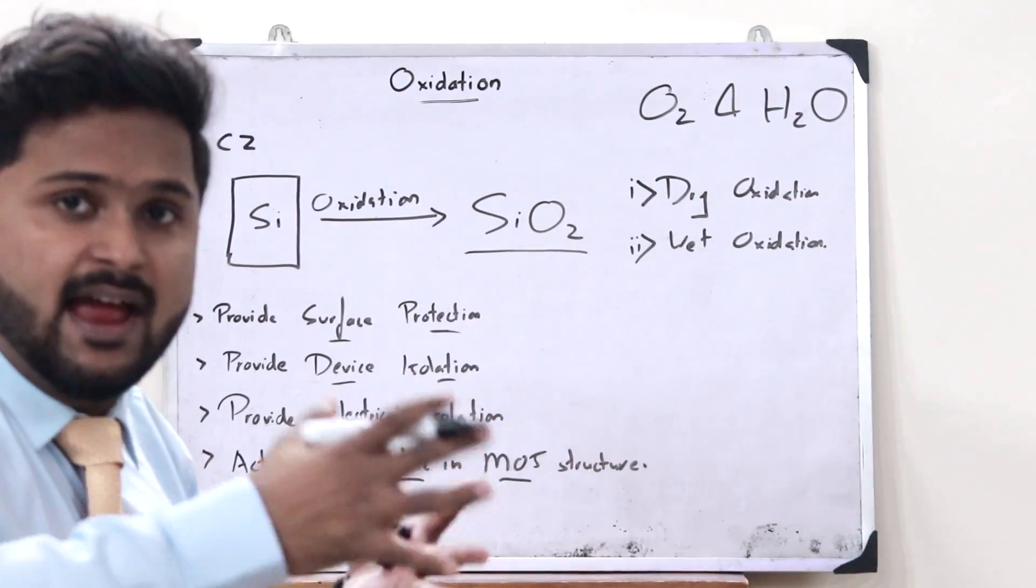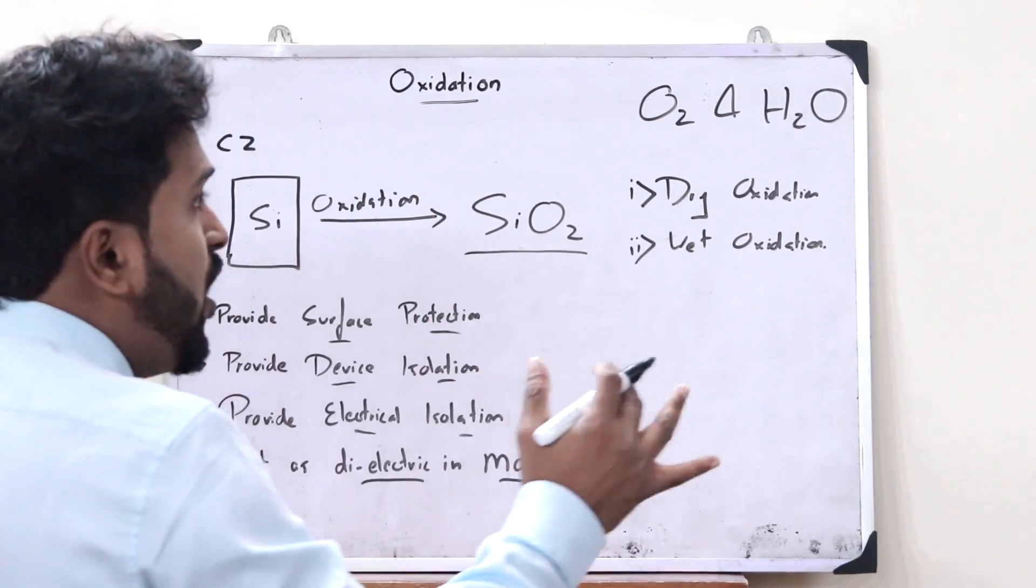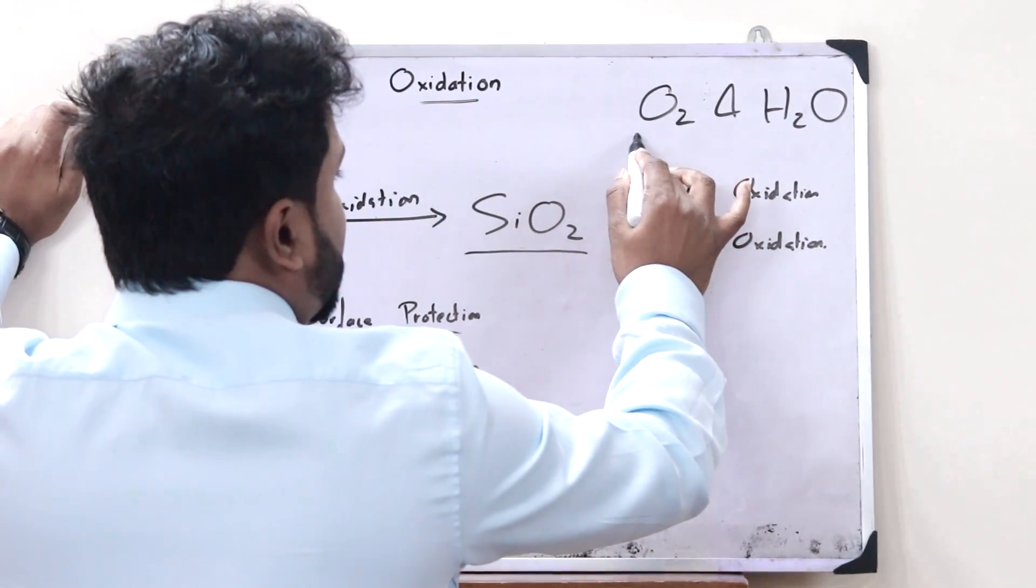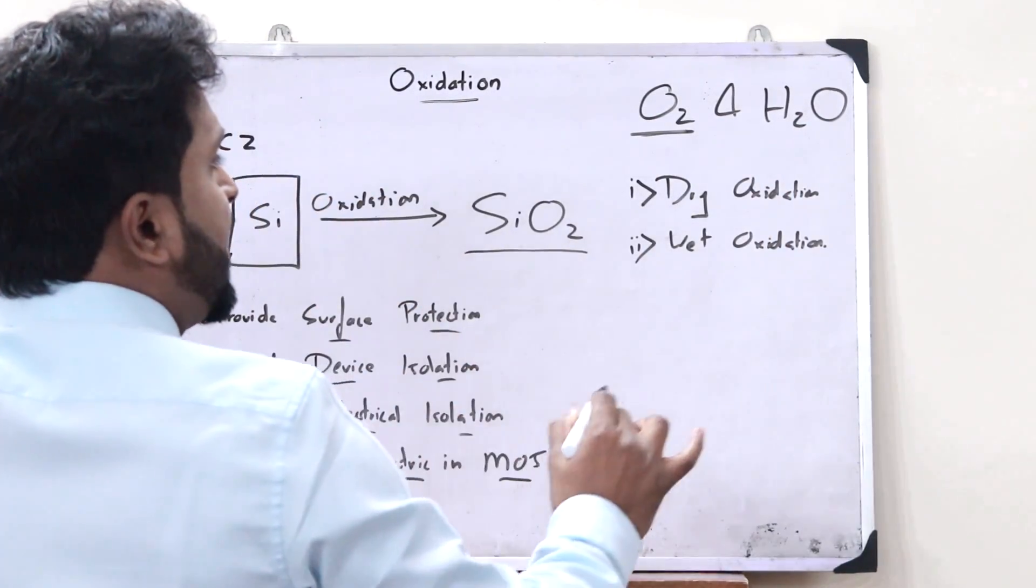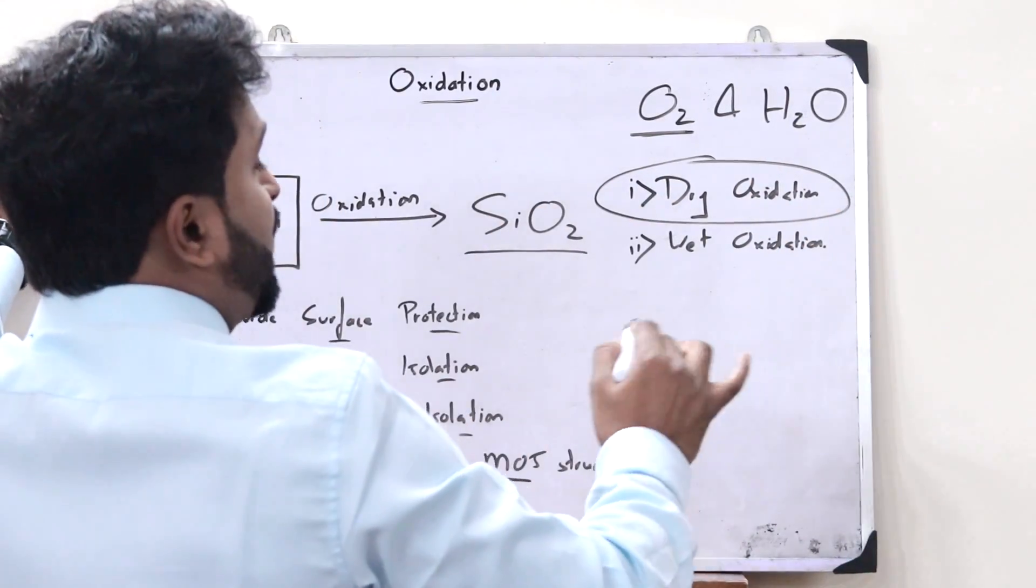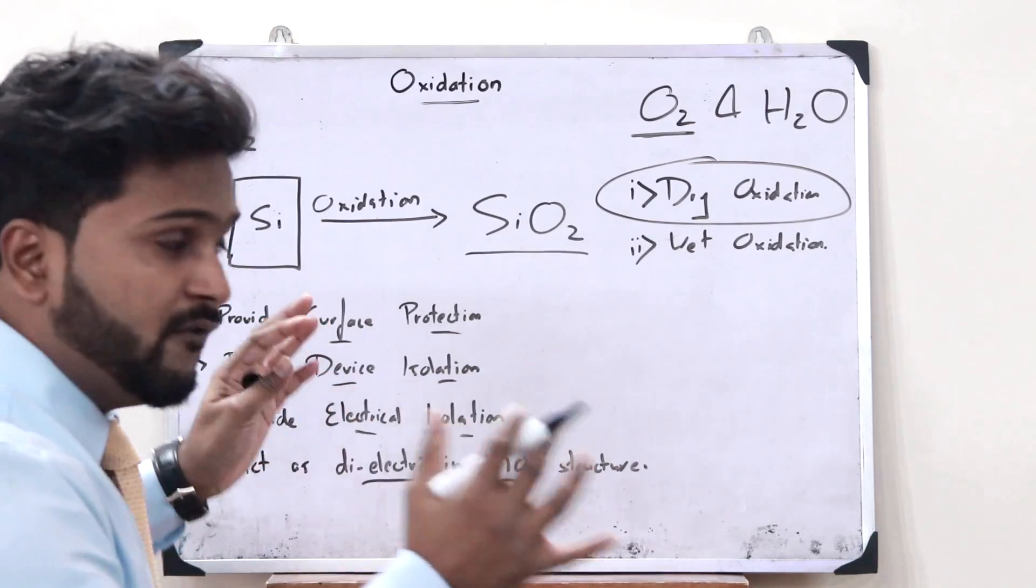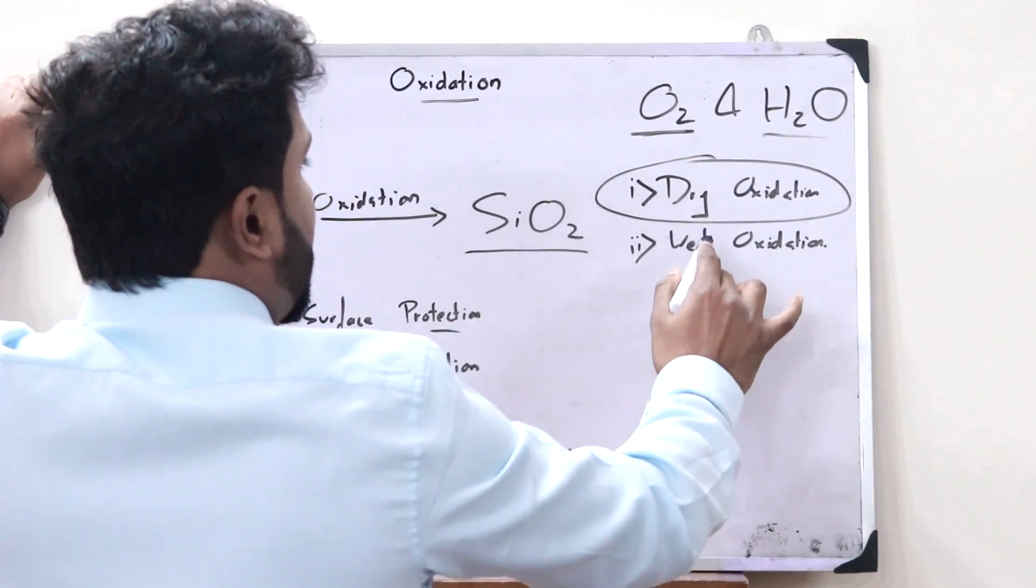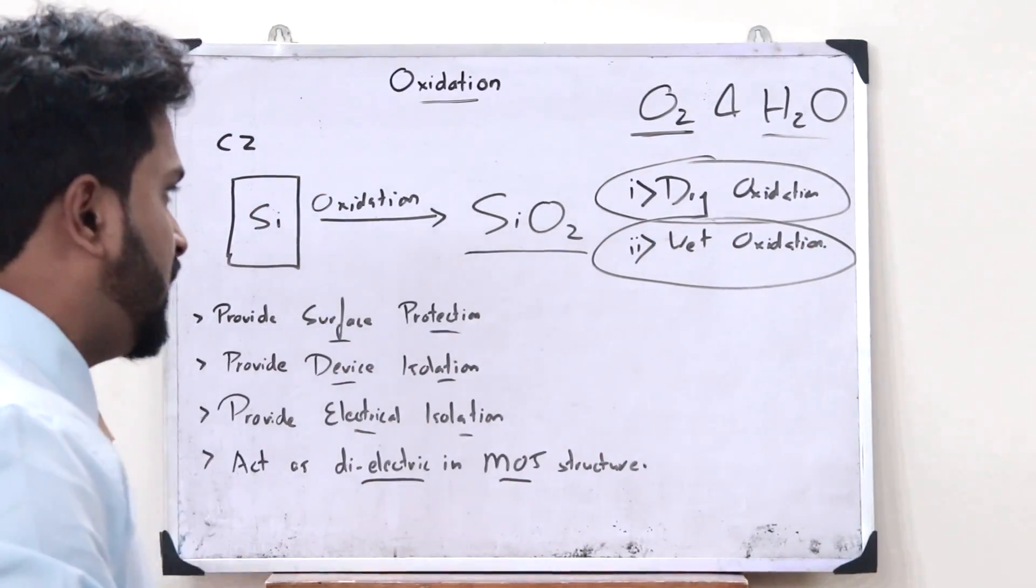When the oxidizing atmosphere is pure oxygen, that is, it comprises of only oxygen, then it is referred to as dry oxidation. And if the oxidizing atmosphere contains water vapor or H2O, then it is simply referred to as wet oxidation.